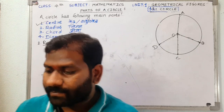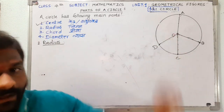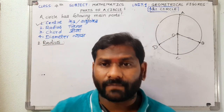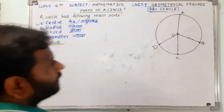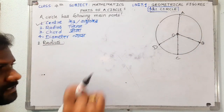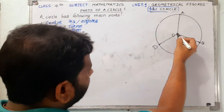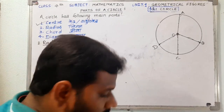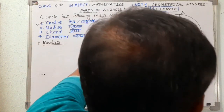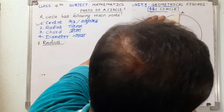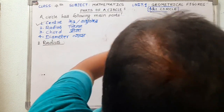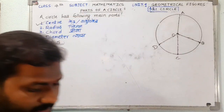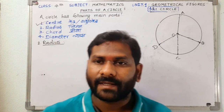In other words, radius is the distance between the center and any point on that circle. We have measured that distance here — the distance is 9 centimeters. So exactly 9 centimeters is the distance of the radius.